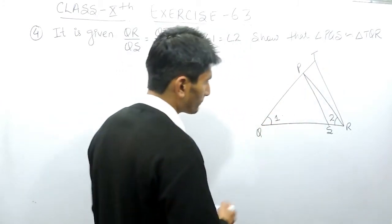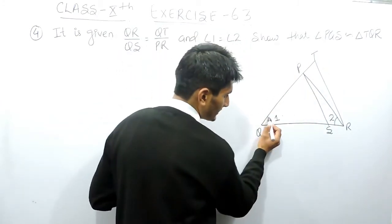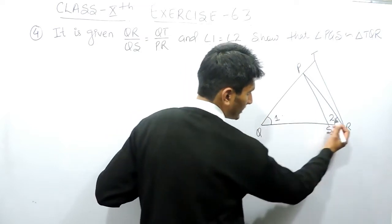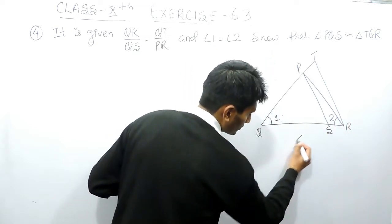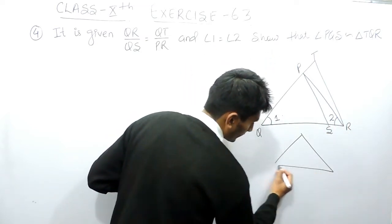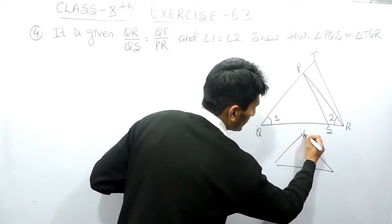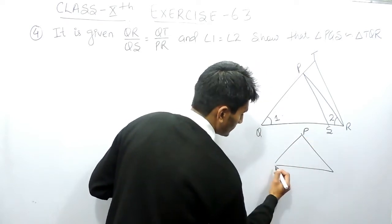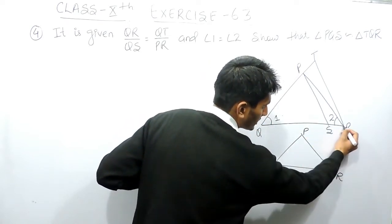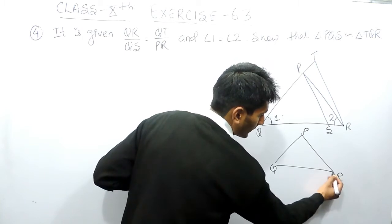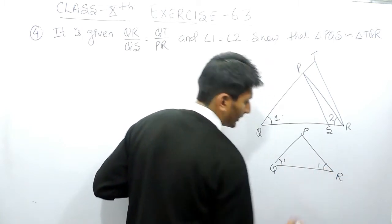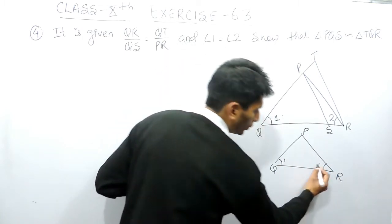So in this triangle, if angle 1 is equal to angle 2 — this is P, this is Q, and this point is R — so here angle 1 is given equal to angle 2.